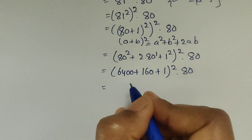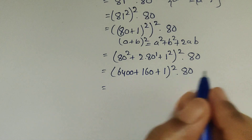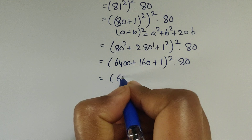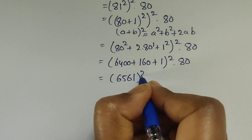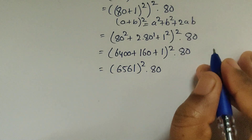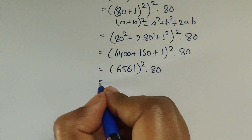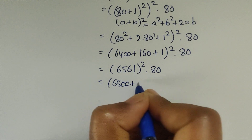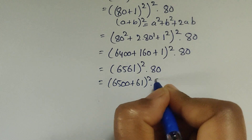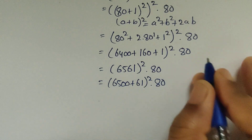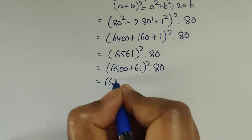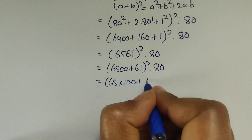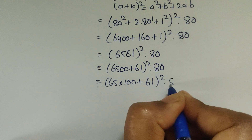If we add all these three terms — 6400 plus 160 plus 1 — we get 6561. So now we have 6561 whole squared times 80. We can write this as (6500 plus 61) whole squared times 80.